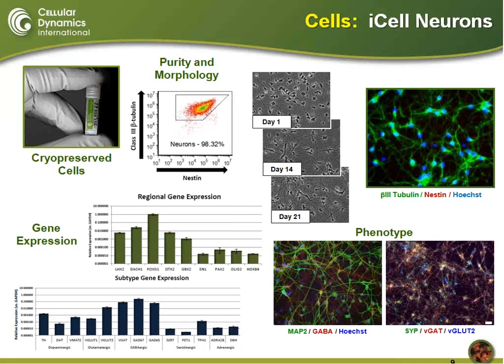The iCell neurons have been determined to be a mixture of both inhibitory GABAergic and excitatory glutamatergic neurons. Gene expression and phenotypic analysis has characterized them for molecular markers including synaptophysin and PSD-95. Something that really sets CDI apart is that these cells can be reproducibly manufactured at large industrial scale with low lot-to-lot variability, which has enabled the successful implementation of iCell neurons in a wide range of functional assays.